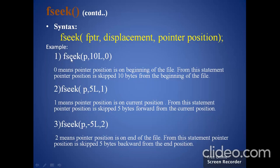The first example is: fseek(p, 10l, 0); Here, p is the name of the file pointer. On the displacement field, we put 10l. On the pointer position, we put 0. Since 0 means the pointer position is at the beginning of the file, and due to the effect of displacement 10l, the pointer position is skipped 10 bytes forward from the beginning of the file.